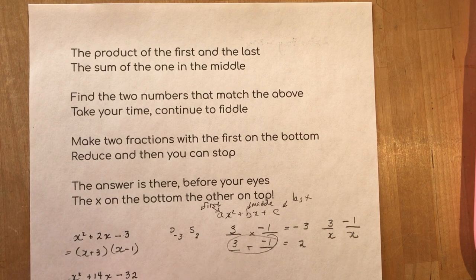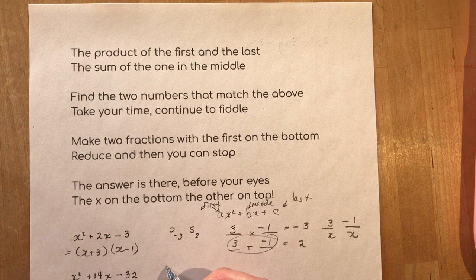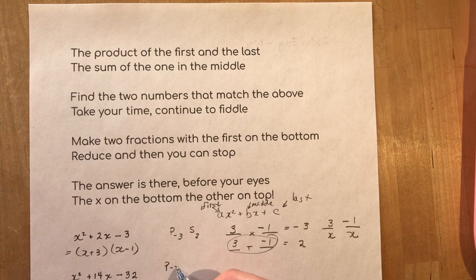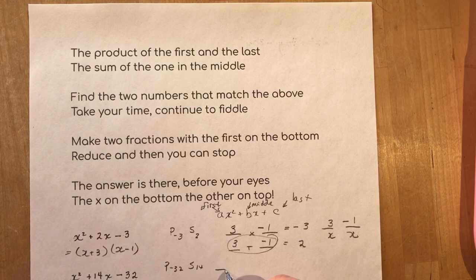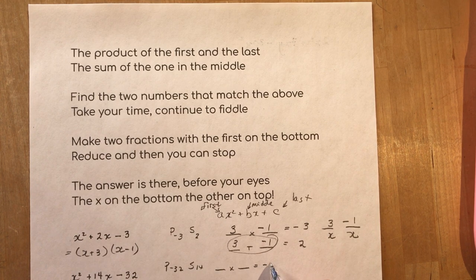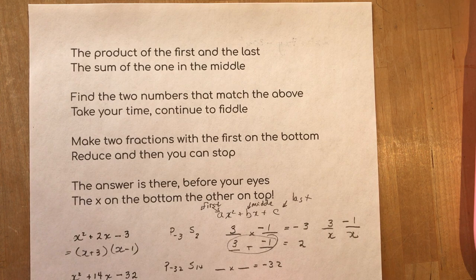Let's try one more. product of the first and the last. Now I know you're going to say I only need to look here but when we do the more complex ones you want to have this down pat. Sum of 14. Two numbers that multiply to give me negative 32 and add to be 14.